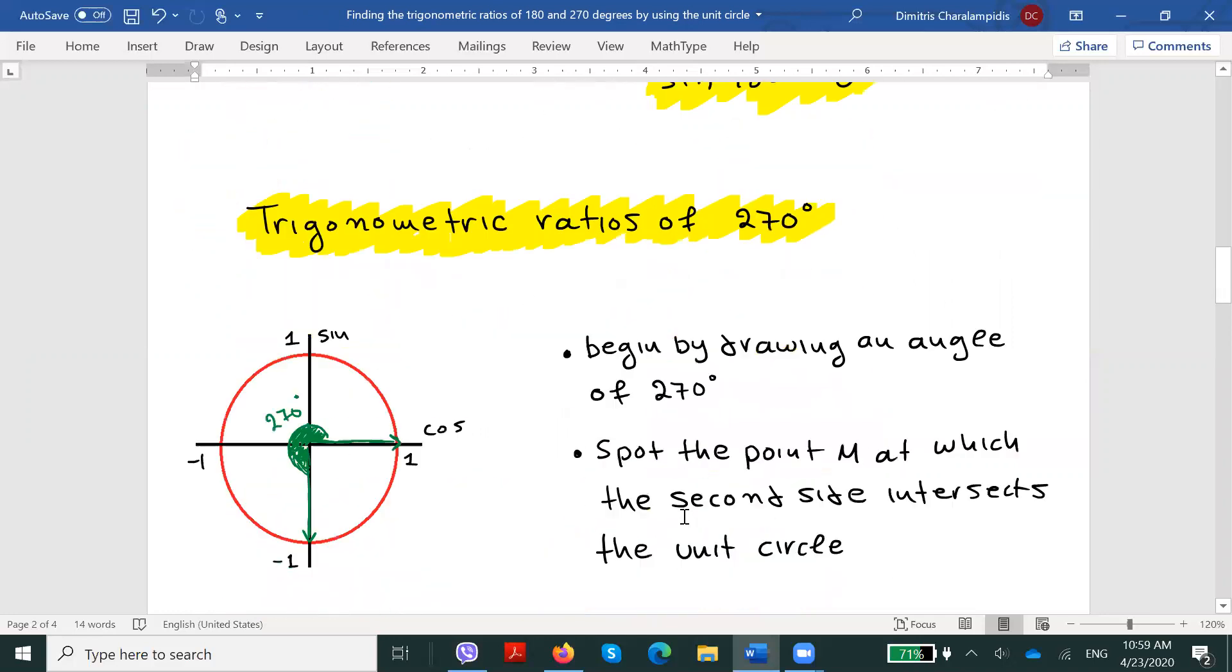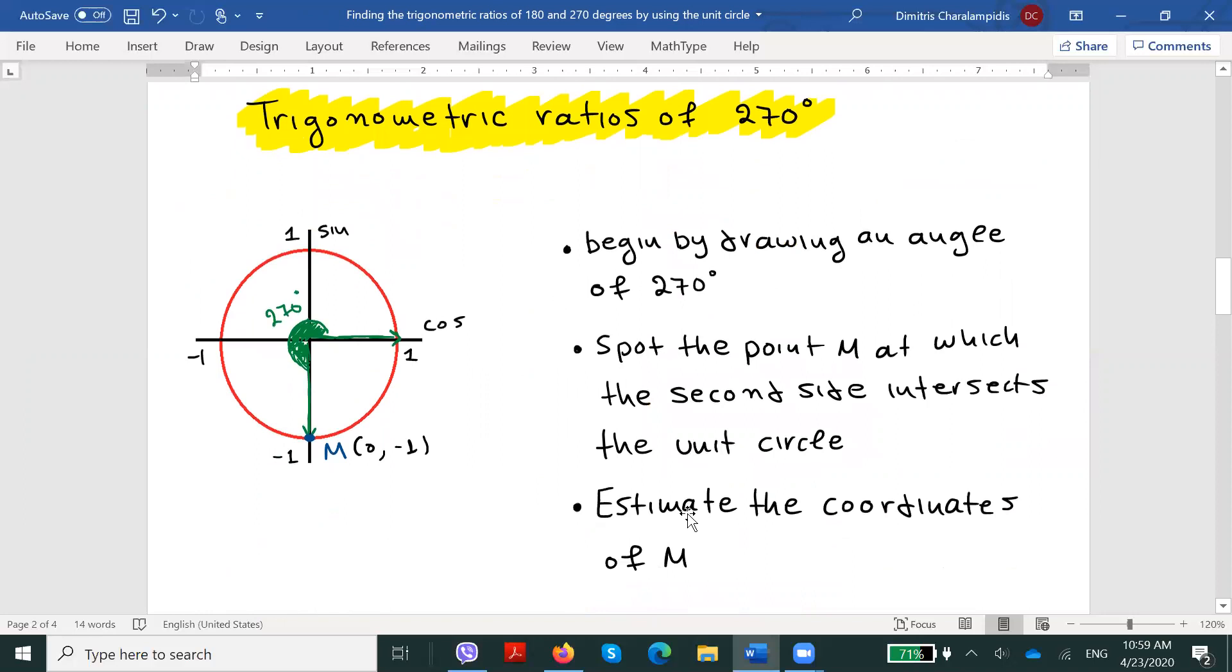Let's follow the same process to estimate the trigonometric ratios of 270 degrees. Again, as you can see in the diagram we have in front of us, we begin by drawing an angle of 270 degrees. Then, we continue by spotting the point M at which the second side of this drawn angle intersects the unit circle. All we have to do now is estimate the coordinates of this point M.